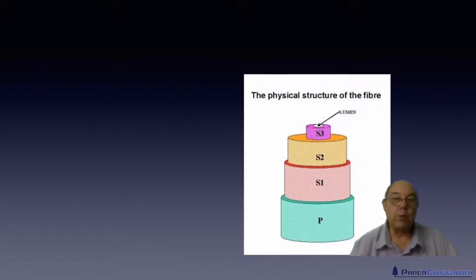The outermost wall is known as the primary wall. And the primary wall has one or two layers of fibrils. Inside the primary wall is the secondary wall. And the secondary wall is divided into three areas. The outermost of those is known as the S1. And there are between four and six layers of fibrils.